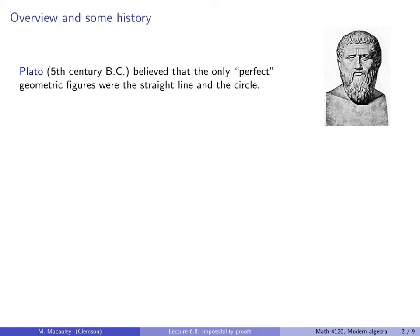This follows from the material in lecture 6.7 on ruler and compass constructions, so please watch that first if you have not already. We'll begin with a brief history of these problems. I talked about this in the previous lecture, so I'm going to go quicker through this version. Plato, who lived in the 5th century BC, believed that the only perfect geometric figures were the straight line and the circle.